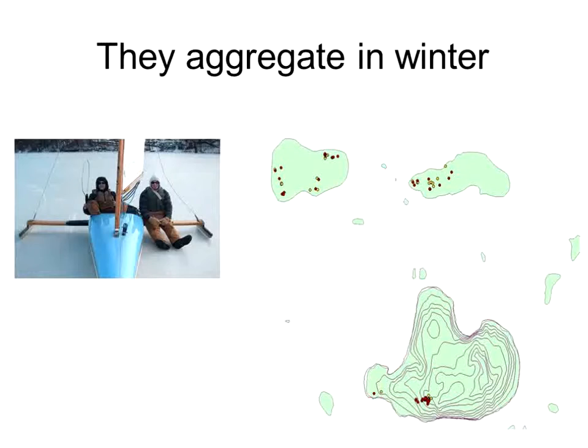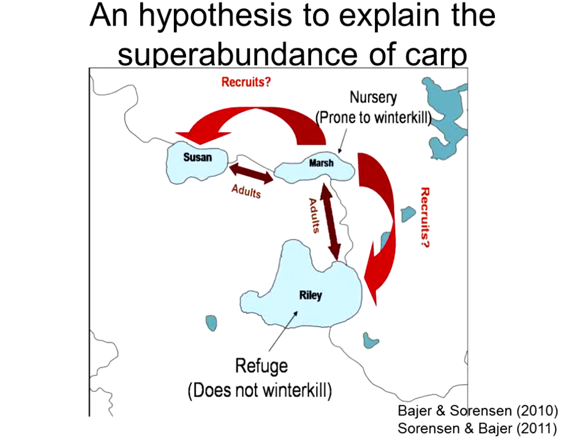One of the things we discovered — and commercial fishermen knew about it for years — was that these fish tend to aggregate remarkably and very strongly in the wintertime. The slide you're looking at shows an aggregation of carp in Lake Riley. You see 20 red dots — those are radio-tagged fish — and they represent a population of about 5,000 adult carp, most of which were 30 to 40 years old.